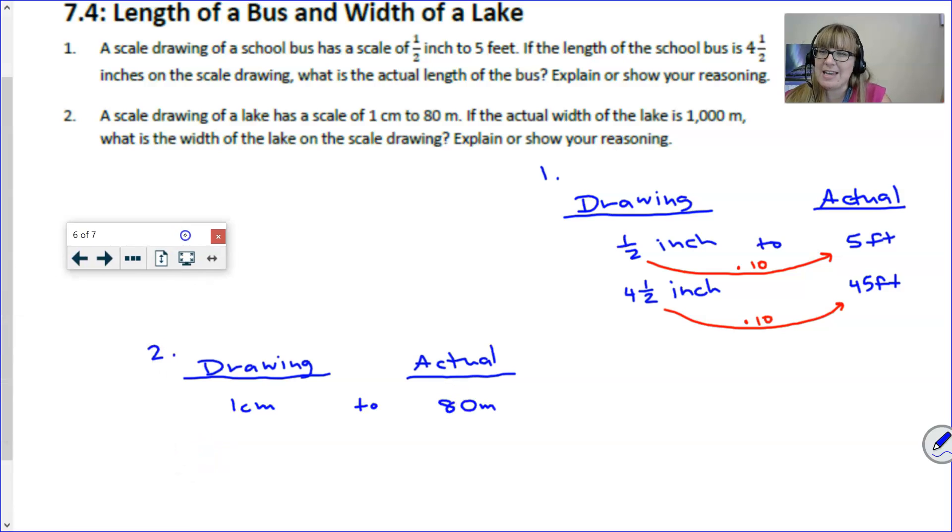And now it's saying if the actual width of the lake is 1000 meters, we want to know how long would it be on the scale drawing. Now this one is not quite as straightforward, but I'm going to show you some other tools that we have that maybe you forgot about. We can start by moving forward and say how does a one change to an 80? That's easy. We multiply it by 80. So then the question is, how would I go in reverse? And this ties very closely into what we did in our previous lesson.